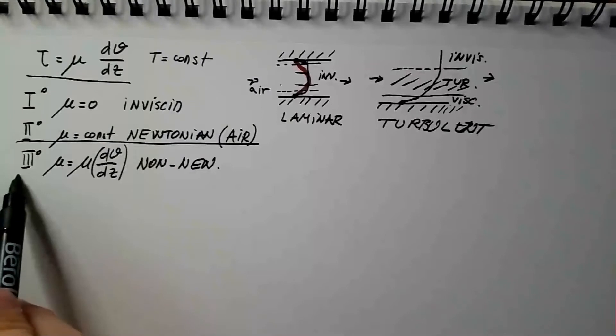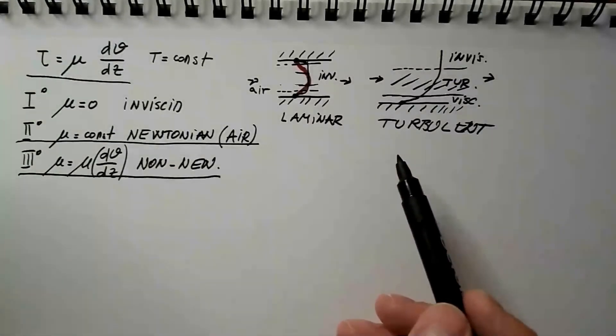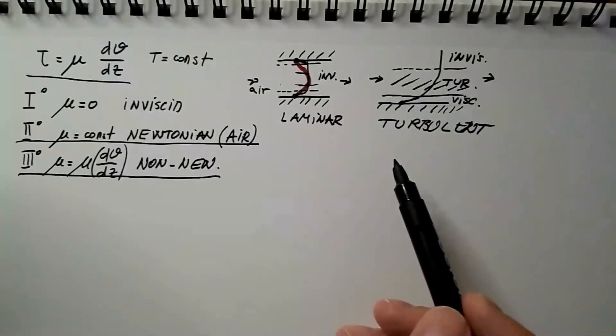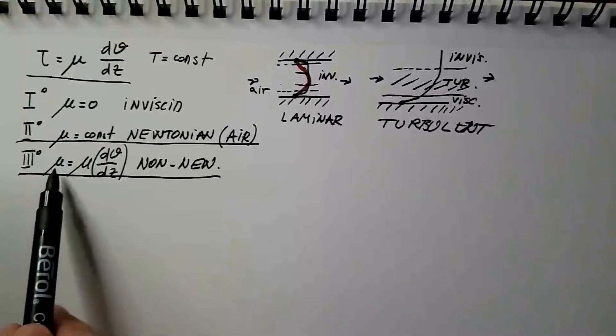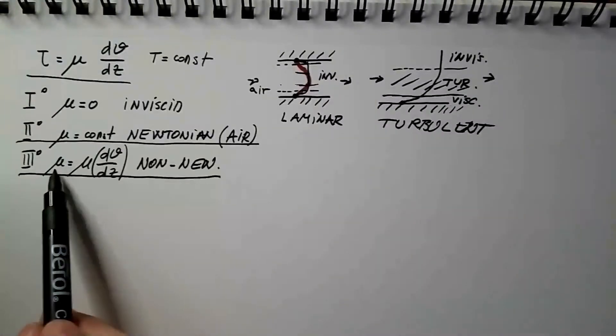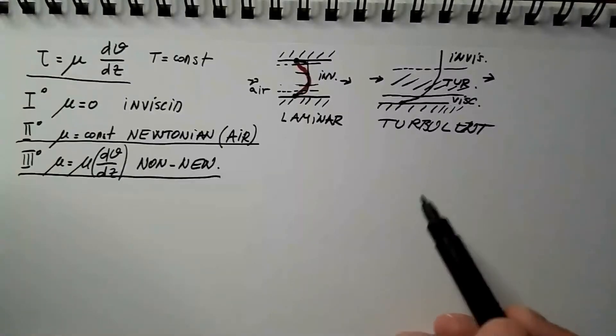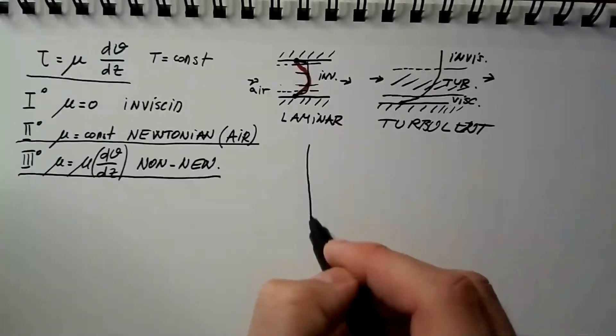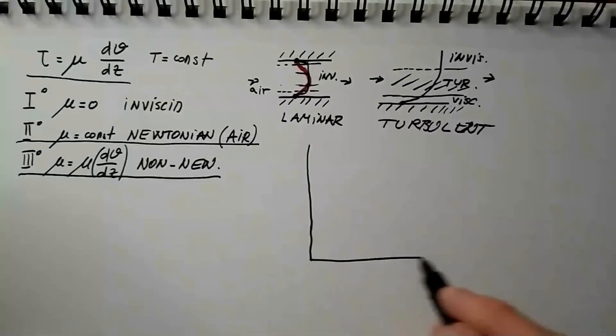Now, let's turn our attention to the last class of fluids, which are non-Newtonian fluids. Non-Newtonian fluids are profoundly different from Newtonian fluids in that viscosity, or dynamic coefficient of viscosity mu, depends on dv over dz, so this whole relationship becomes non-linear. To demonstrate that, we can use this graph.